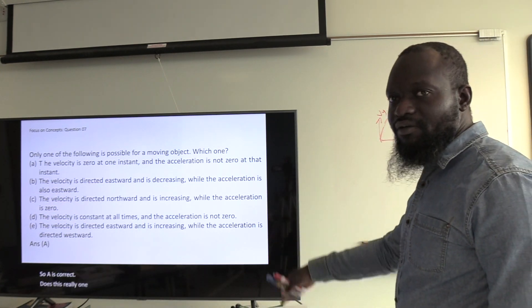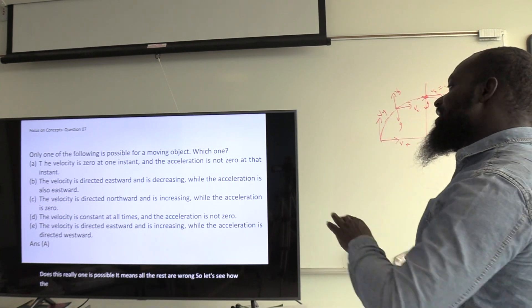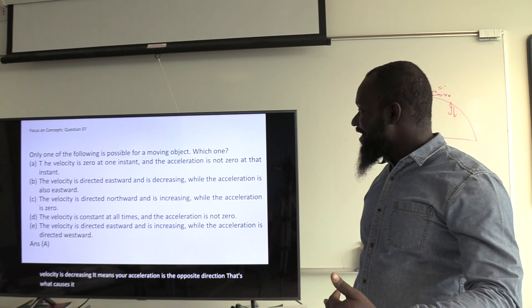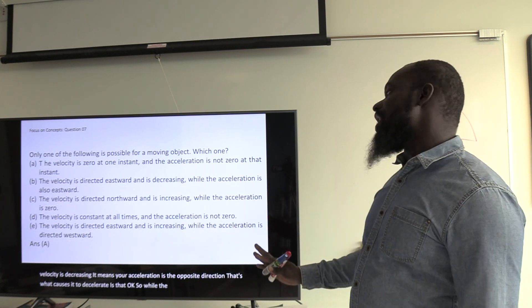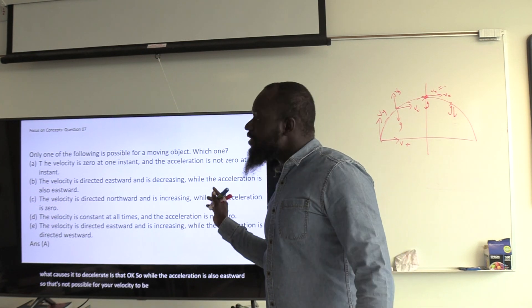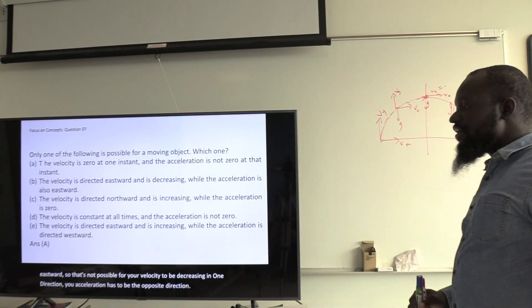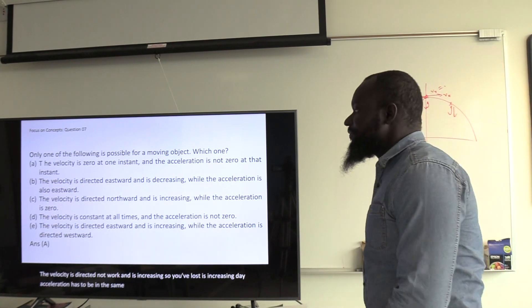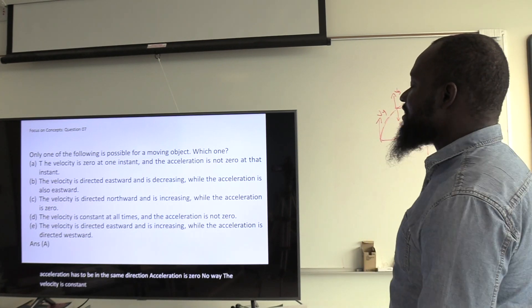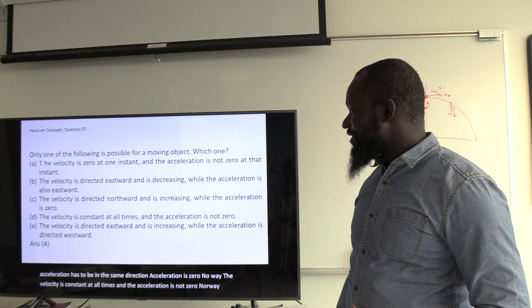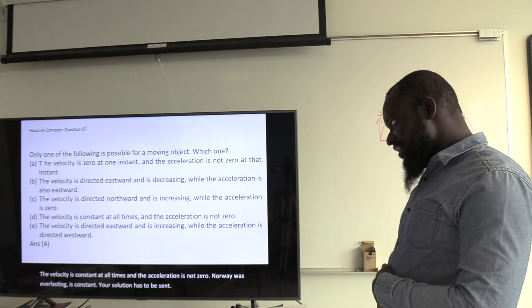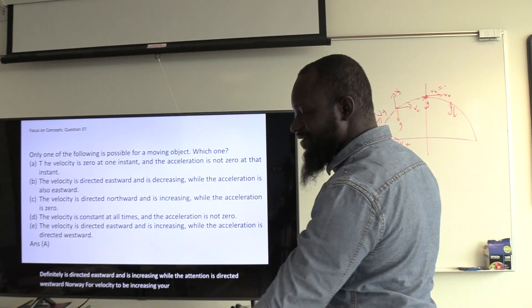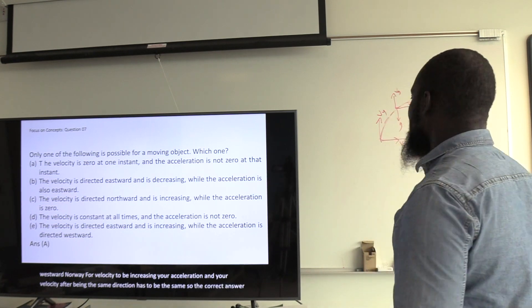Since only one is possible, the rest are wrong. The velocity directed eastward is decreasing while acceleration is also eastward — not possible; for velocity to decrease, acceleration must be the opposite direction. Velocity northward increasing while acceleration is zero — no way. Velocity constant at all times while acceleration is not zero — no way; constant velocity means zero acceleration. Velocity eastward increasing while acceleration is westward — no way; increasing velocity requires acceleration in the same direction. So the correct answer is A.